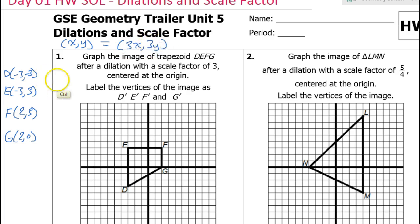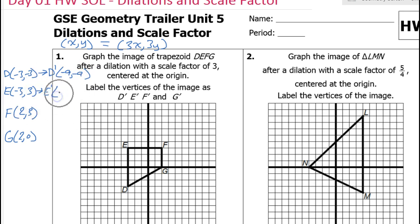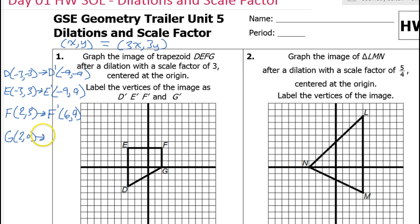We're just going to multiply everything by 3. So point D prime is going to be negative 9 comma negative 9. E prime is going to be negative 9 comma positive 9. F prime is going to be 6 comma 9. And G prime is going to be 6 comma 0.